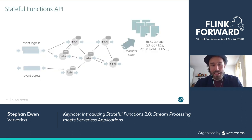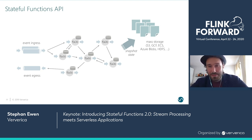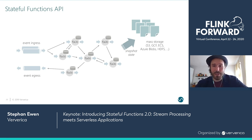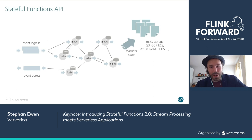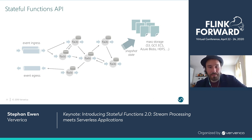The core idea of the Stateful Functions API is building applications not as streaming data flows, but building them out of individual functions that own local state and message each other. It's in some sense almost like actor programming, but with some very specific properties like statefulness and exactly-once messaging — in a very similar way as you're used to from stream processing — but with the flexibility of arbitrary messaging that you get from actor systems.